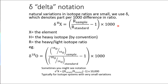Just to note that sometimes isotope variation is extremely small, and we might want to multiply by 10,000 instead. In that case, the symbol epsilon is sometimes used — just note that this may appear in some geological literature.